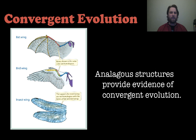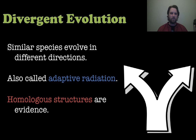If you look at the wings of bats, birds, and insects, these are all analogous structures. So convergent evolution will have some evidence when we look at analogous structures — structures that have the same function but came from different ancestors.